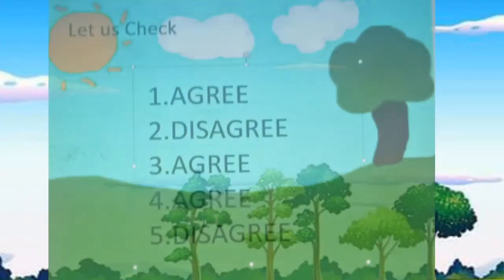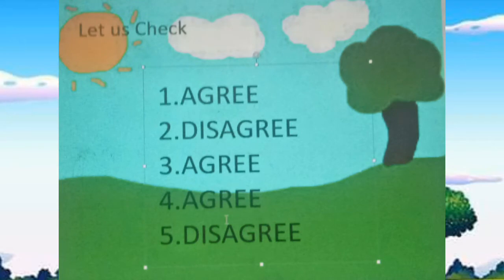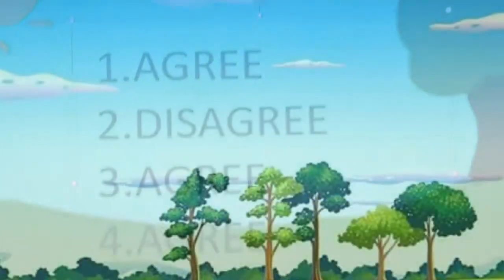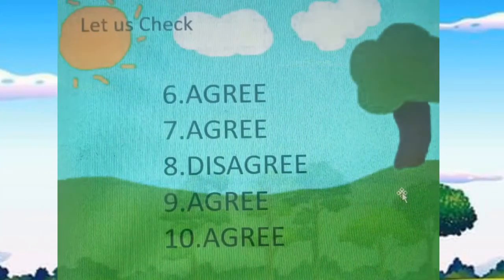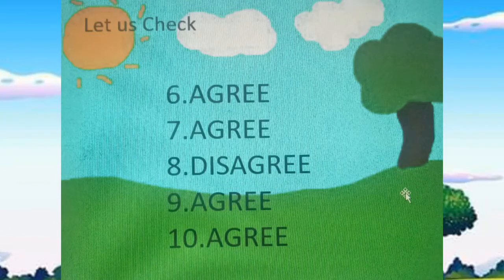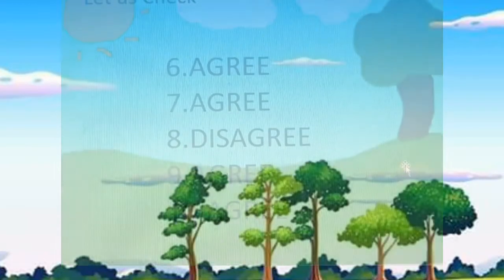Now let us check your answers. Number 1: agree. Number 2: disagree. Number 3: agree. Number 4: agree. Number 5: disagree. Number 6: agree. Number 7: agree. Number 8: disagree. Number 9: agree. And number 10: agree. Since I know that everybody is ready for our new lesson, let us fasten your seatbelt and relax.